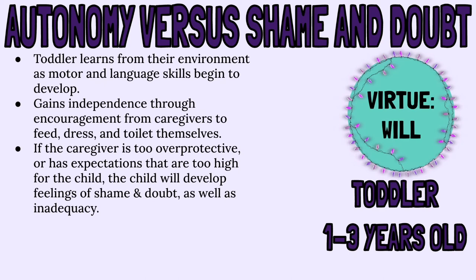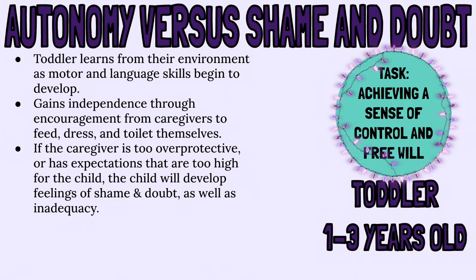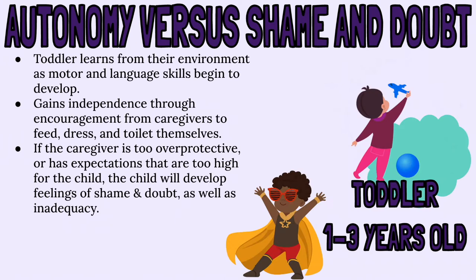Next is Erikson's developmental stage for toddlers: autonomy versus shame and doubt. The virtue for the toddler is will. Their developmental task is to achieve a sense of control and free will — hence the word autonomy. During this stage, the toddler begins to develop language and motor skills. They begin to learn from their environment and gain independence to feed, dress, and toilet themselves. This newfound independence will need encouragement from caregivers, so if the caregivers are too overprotective or have expectations for the child that are too high, he or she will feel shame and doubt instead of autonomy.